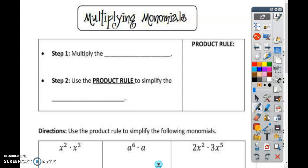So first of all, you will multiply the coefficients. The coefficients are the numbers in the front of the letters, of the variable. So the coefficients, you're going to multiply.